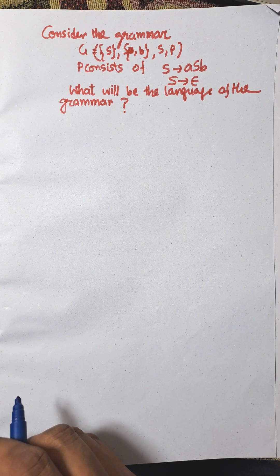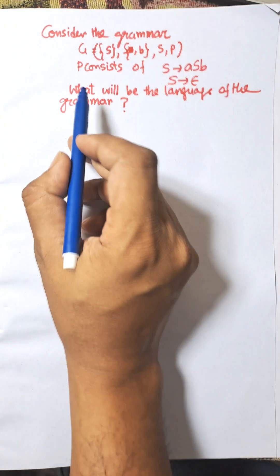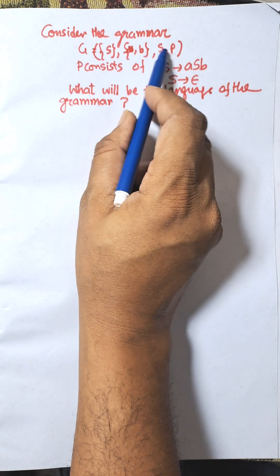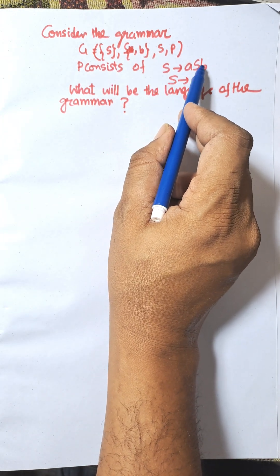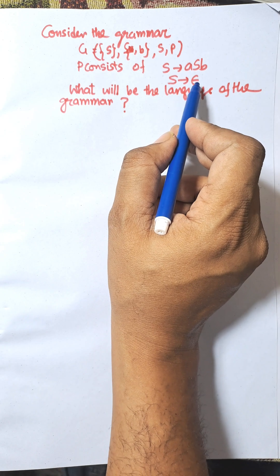Hi everybody, in this video I am going to solve the following problem. Consider the grammar G with variables S, a, b, and production rules P. P consists of these production rules: S to aSb, and S to epsilon.